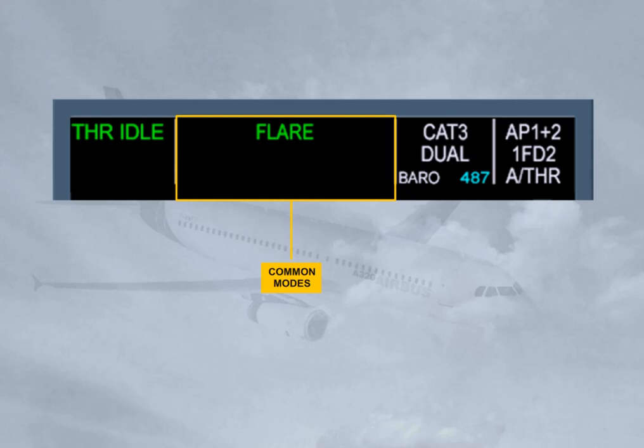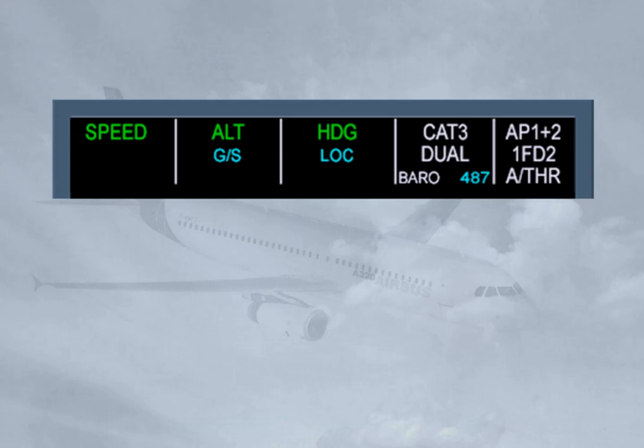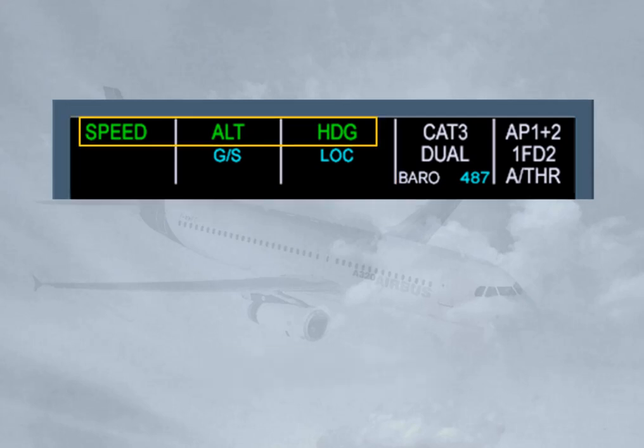You will study all the modes in later modules. The FMA can display three lines in each column. The first line shows the engaged modes to the flight guidance system. In our example, the speed mode is engaged for the autothrust — this means that the autothrust will manage the thrust to track the target speed. The altitude mode is engaged for the vertical mode, meaning the autopilot and flight directors will provide guidance to maintain altitude. The heading, HDG mode, is engaged for the lateral mode, meaning the autopilot and flight directors will provide guidance to the selected heading. Note: the color coding will be explained later when managed guidance and selected guidance are discussed.